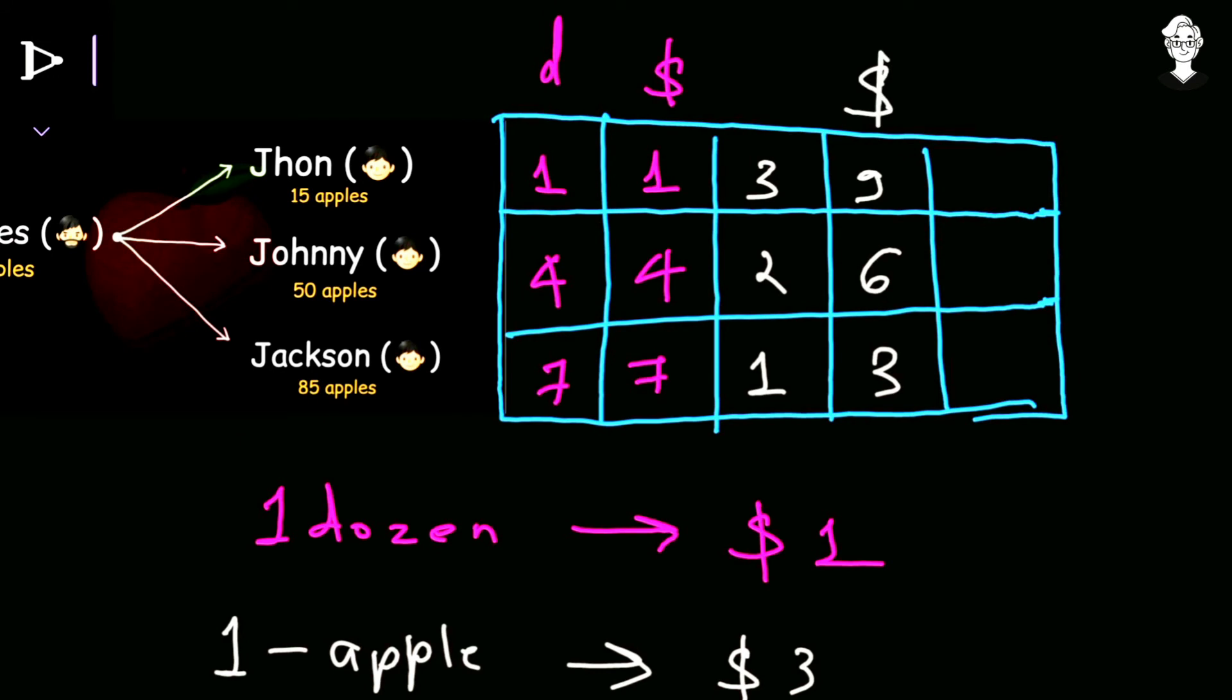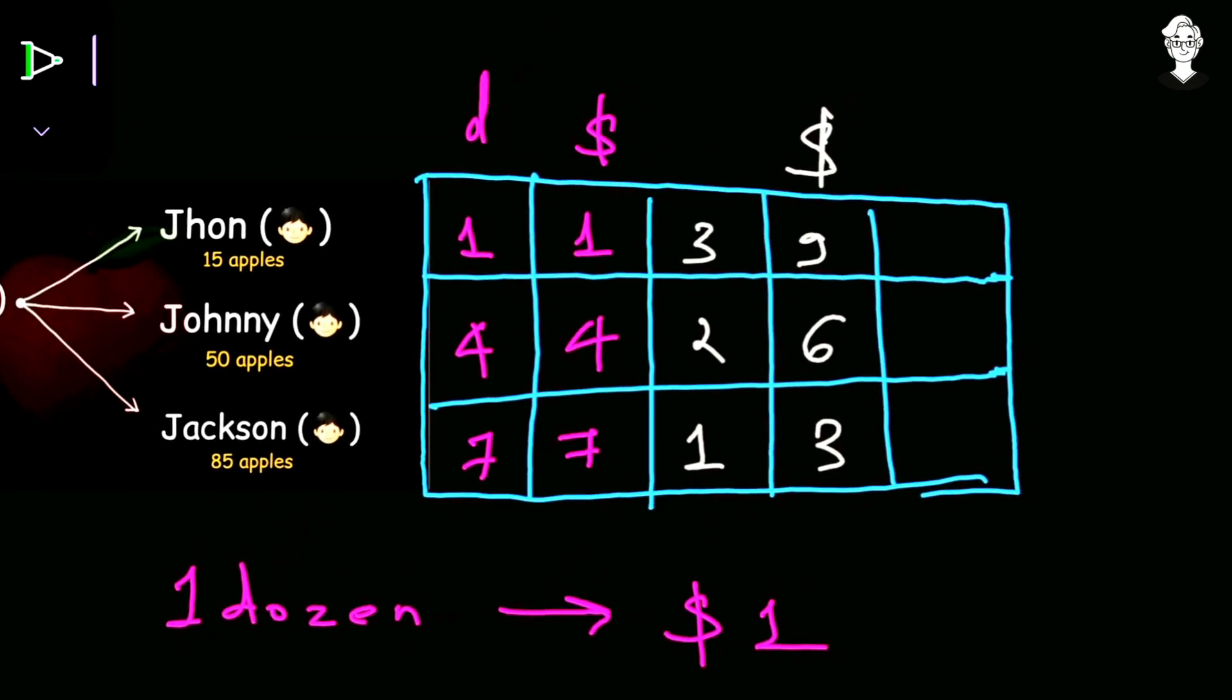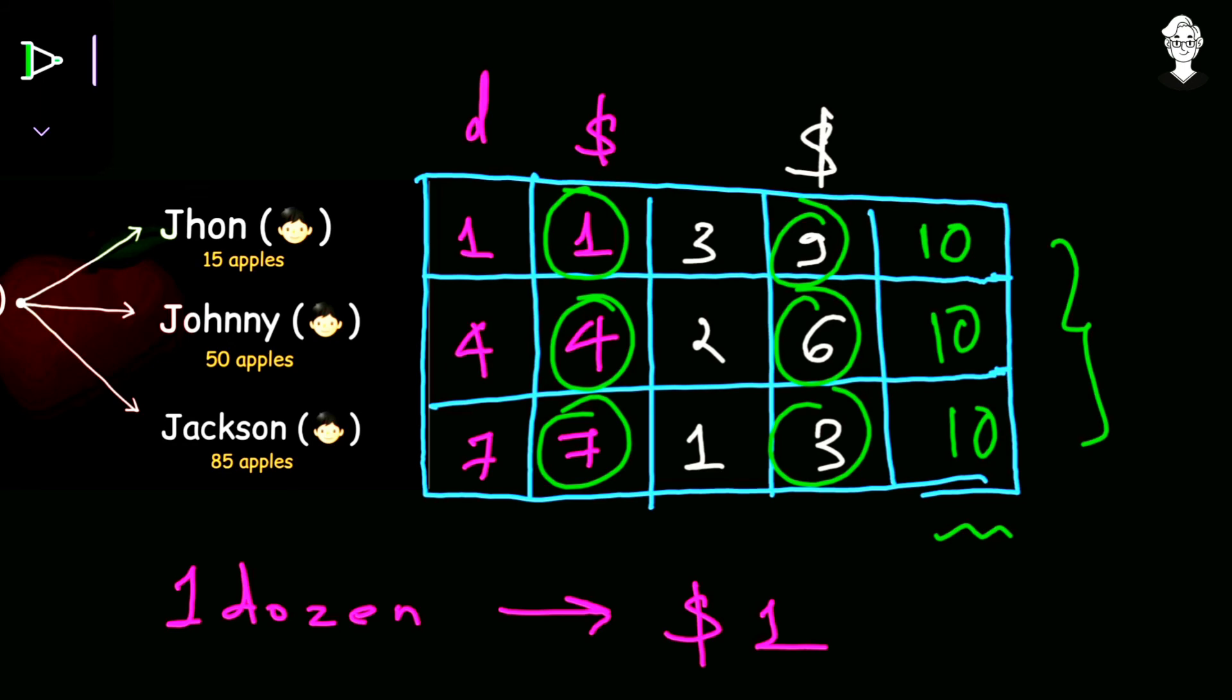This is the amount they receive after selling the remaining apples at the same price. Now let us have the total. The amount John received is 1 and 9, so that's $10. Johnny has 4 and 6, that is $10. Jackson has 7 and 3, that is again $10. Hence they sell all their apples and at last they have the same amount of money, and that is $10.